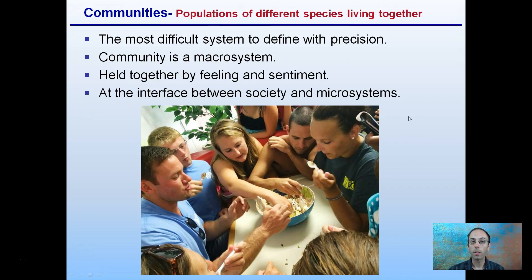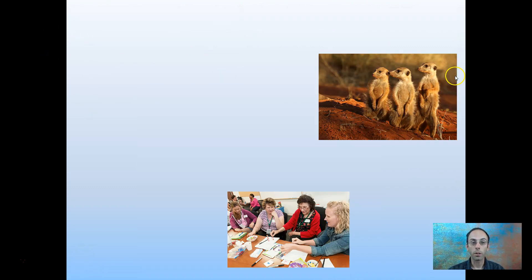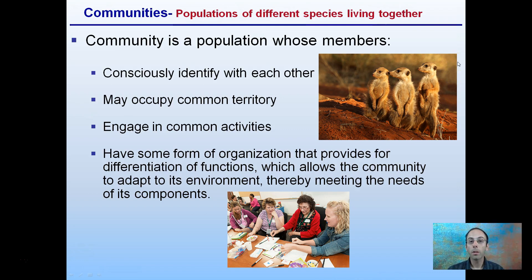Communities are populations of different species living together. A community is the most difficult system to define with precision, because communities are macro systems — large systems held together by feeling and sentiment, at the interface between society and micro systems. A community could be a school community, a town community, a state community, or a regional community. The consistent part is populations of different species living together, where the populations identify with one another, occupy common territory, engage in common activities, and have some form of organization that allows the community to adapt to its environment and meet the needs of its components.